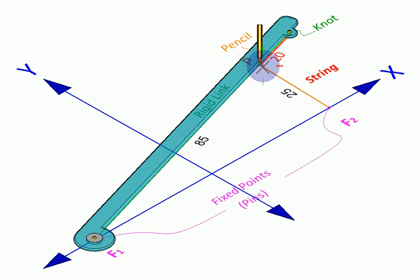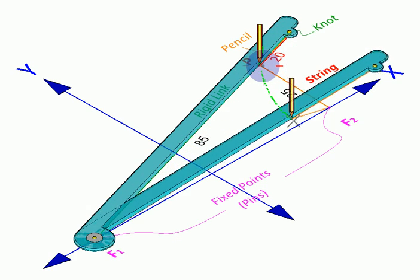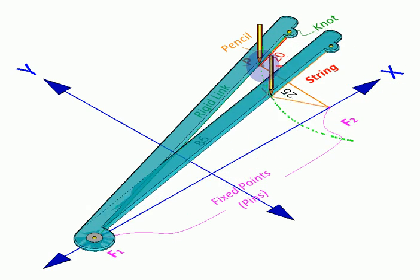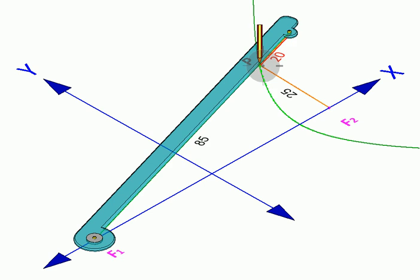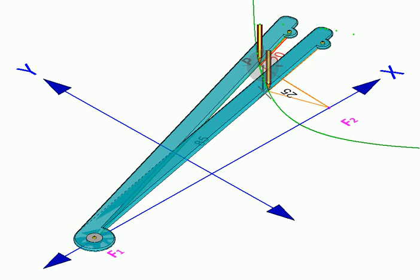So we can move this and you'll see the pencil is tracing a string of points. Let's get rid of these labels and actually see what the curve is.